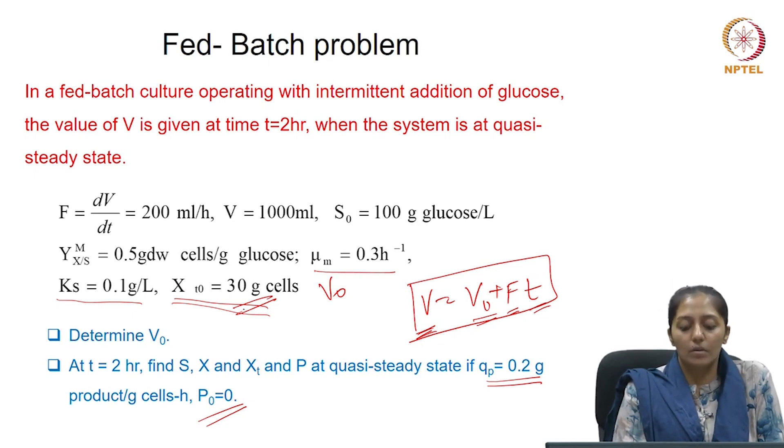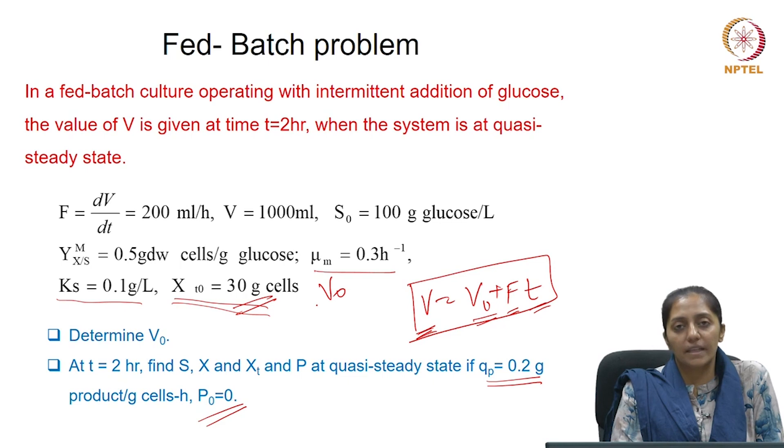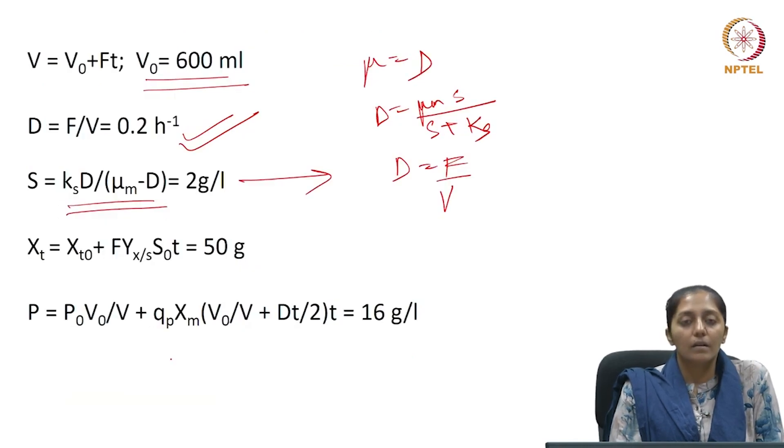So, the biomass concentration can be directly obtained from here as the amount of cells divided by the volume. So, if you do this, you will end up getting, how much will it be? Let us see, 30 by, 20 multiplied by 1000.